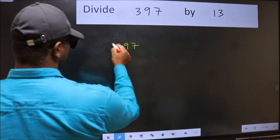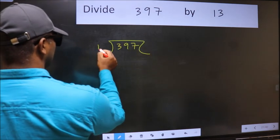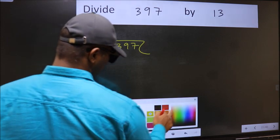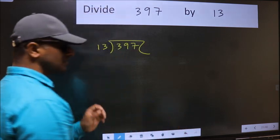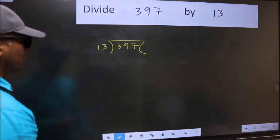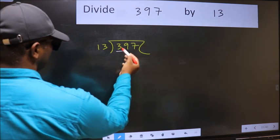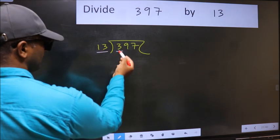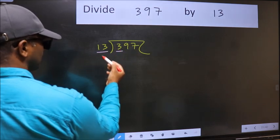397 and 13 here. This is your step 1. Next, here we have 3 and here 13. 3 is smaller than 13.